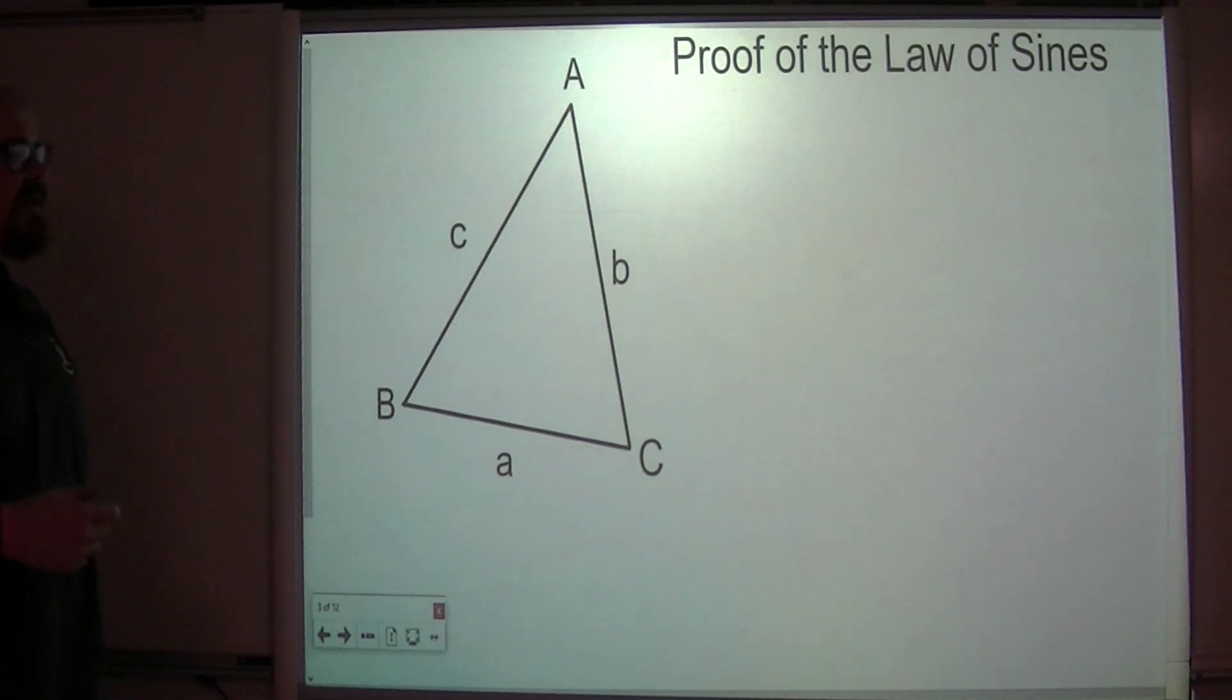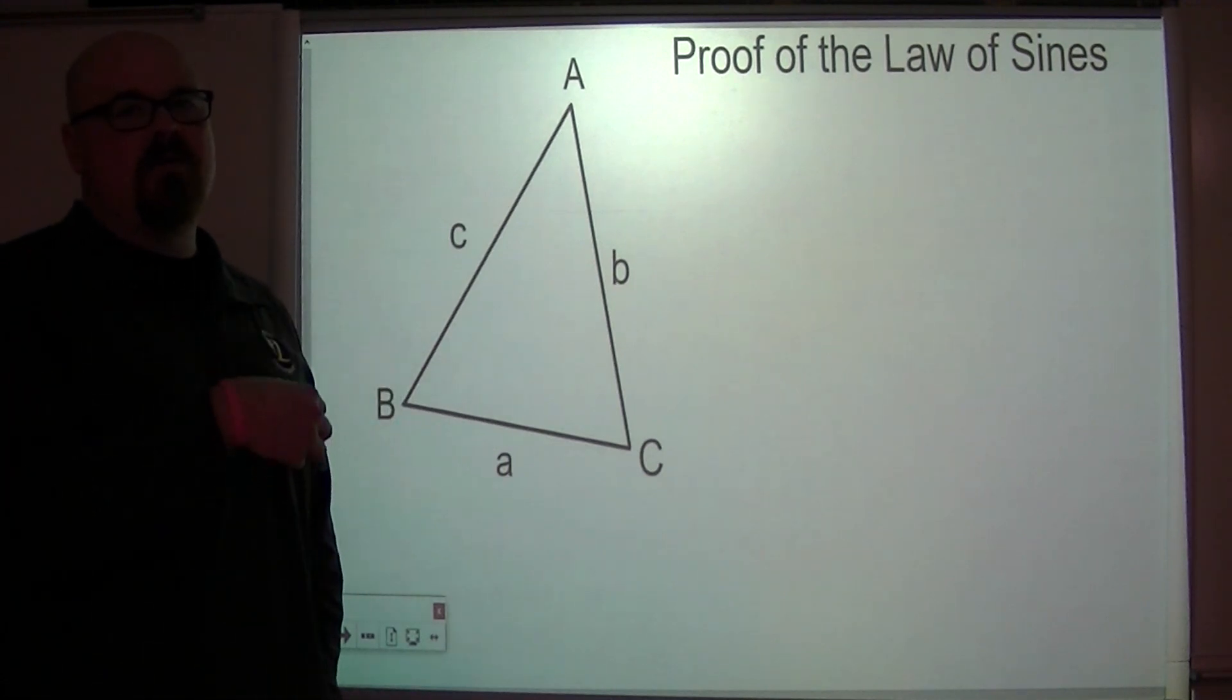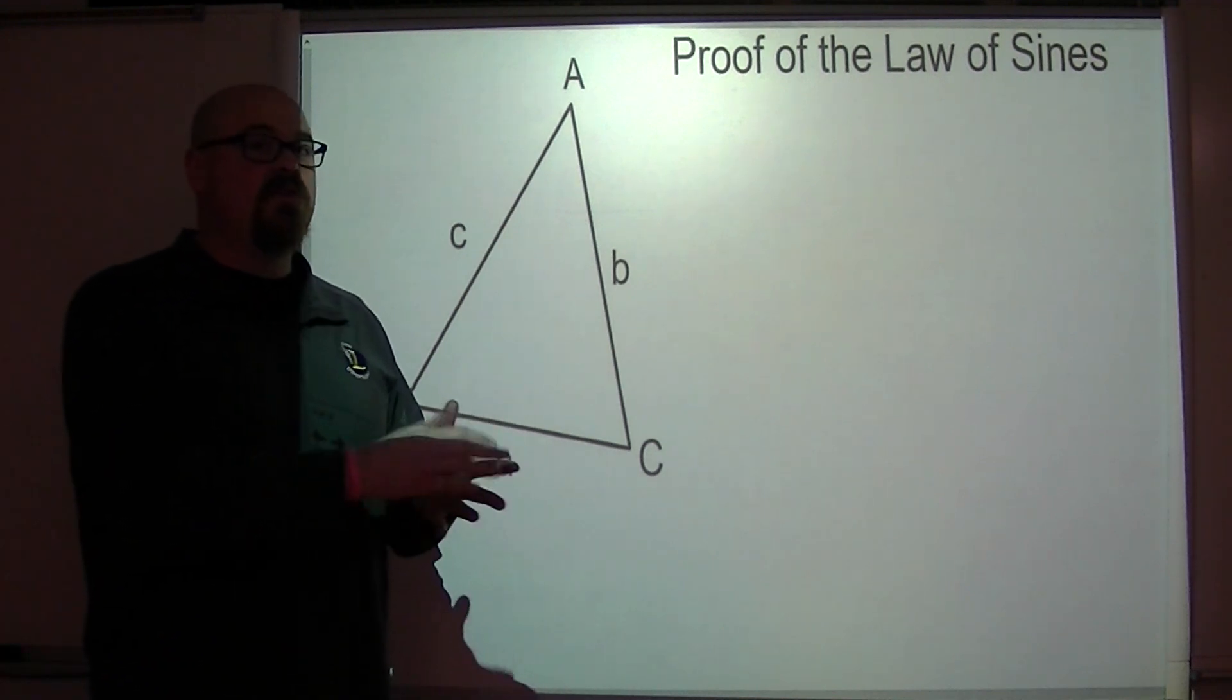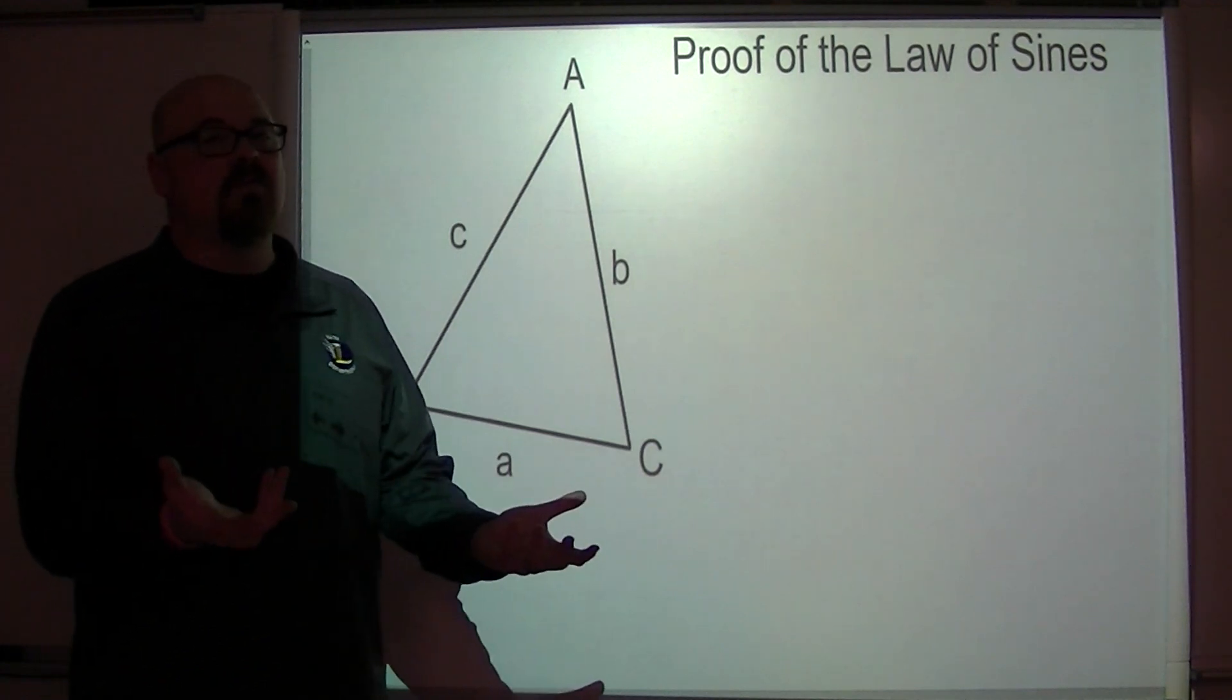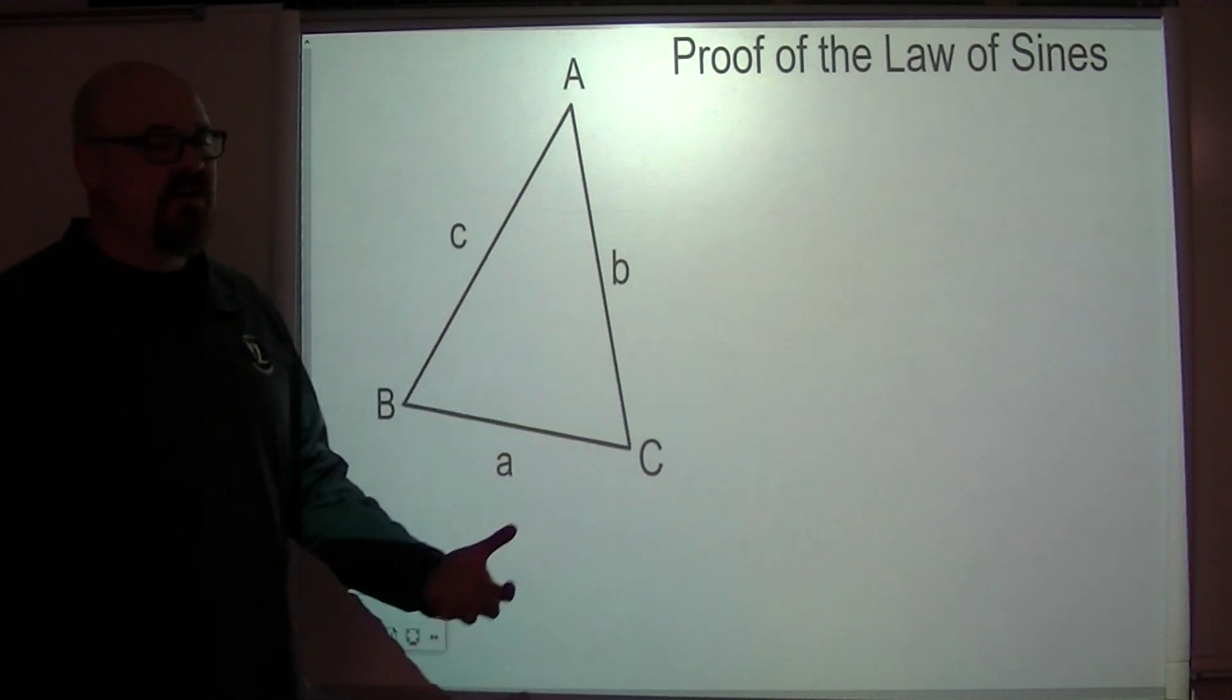So, the law of sines is what we call an extended proportion. It helps you solve for a triangle. When we talk about solving a triangle, that means you can find all of the angles and all of the sides. Obviously, you're going to be limited with the information that you're given. So, to set up the law of sines, here's what we're going to do.